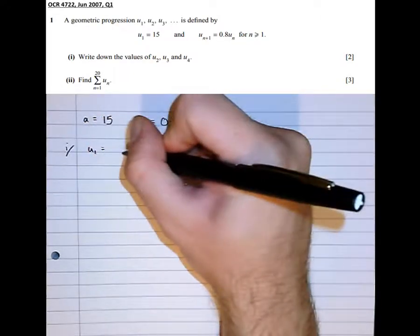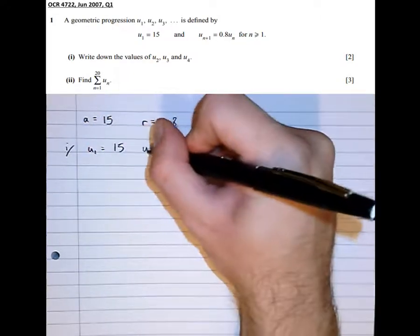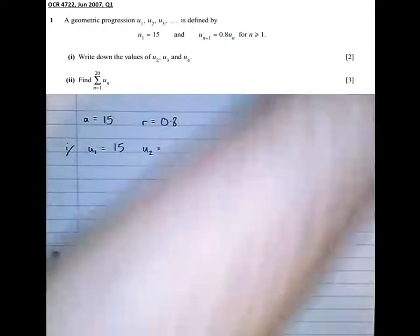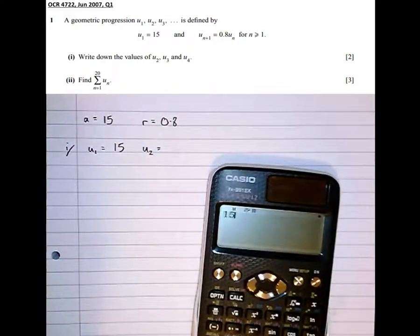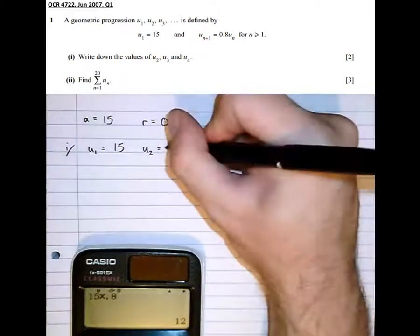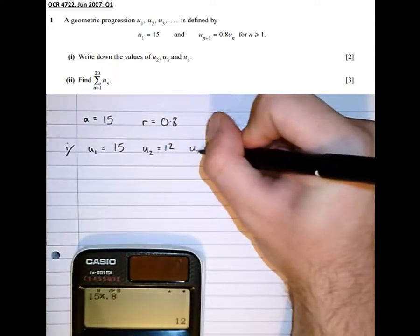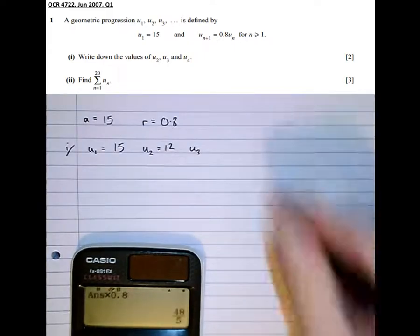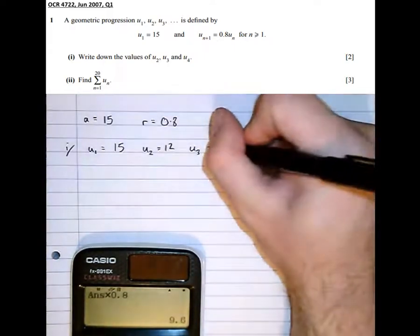So u2 is obtained by timesing that by 0.8, which gets us 12. u3, times that by 0.8, to get 9.6.